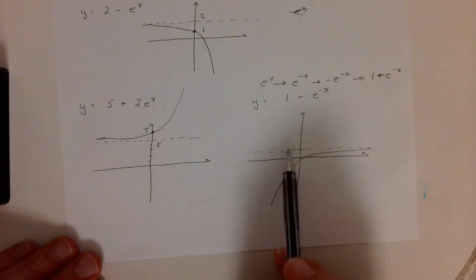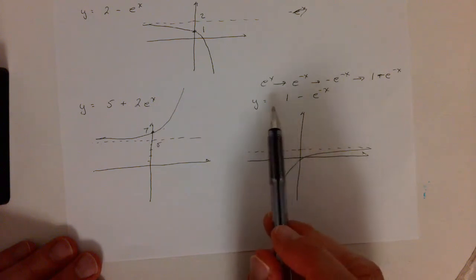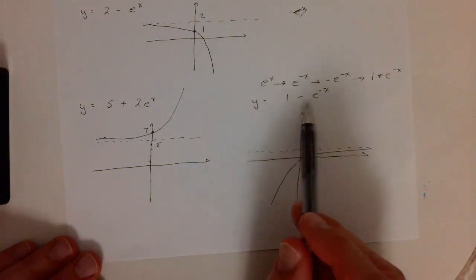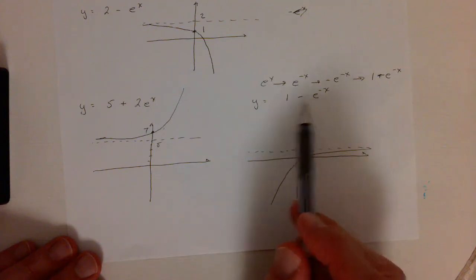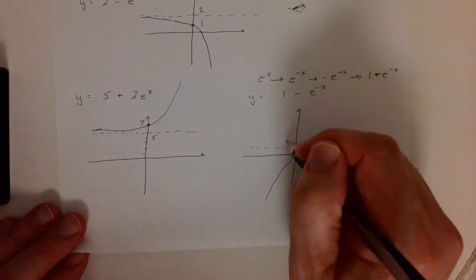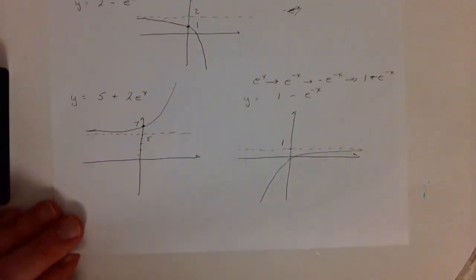And again, you can see, you should be able to see that y has to be less than 1 because it's 1 minus a positive number. E to the minus x is going to be positive. So, it doesn't matter if we have an x or a minus x, e to this is always going to be positive. We subtract 1 minus a positive number, that's always going to be less than 1. So, there's our horizontal asymptote.